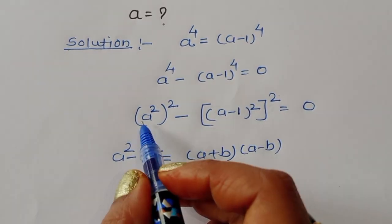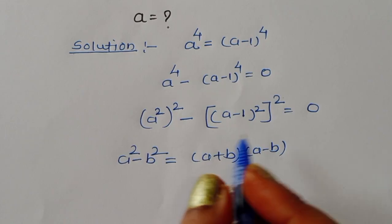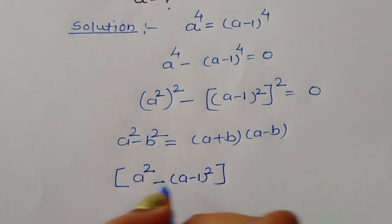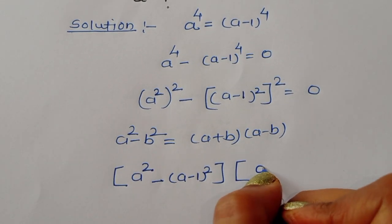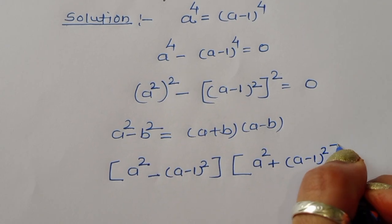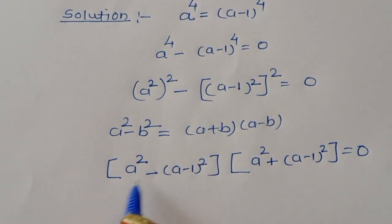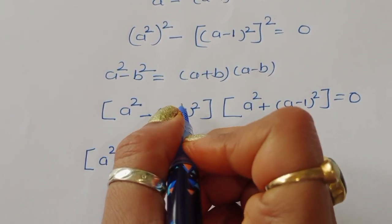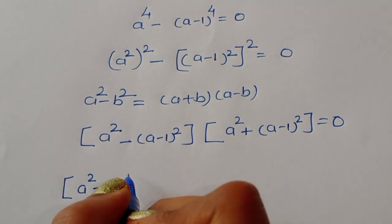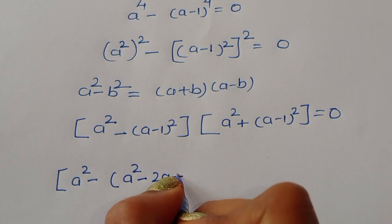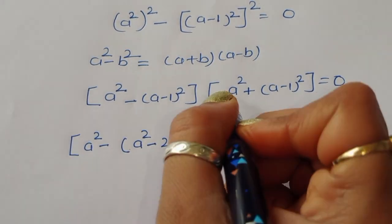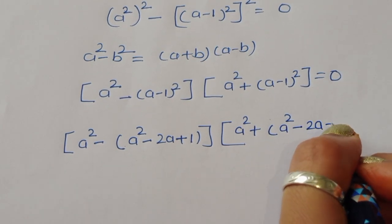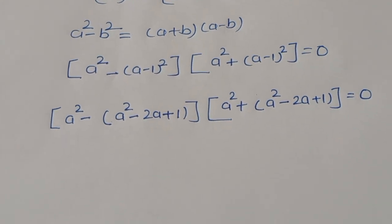Using the formula a square minus b square equals a plus b times a minus b, we get: a square plus a minus 1 whole square times a square minus a minus 1 whole square equals 0. Now expanding a minus 1 whole square using the formula a square minus 2ab plus b square gives a square minus 2a plus 1.